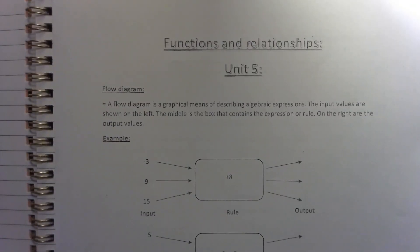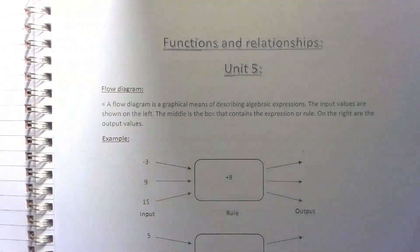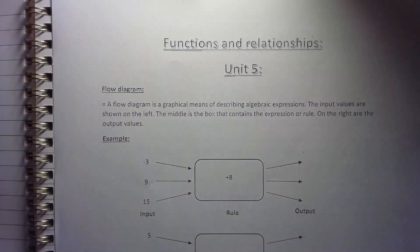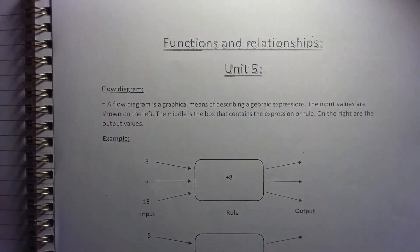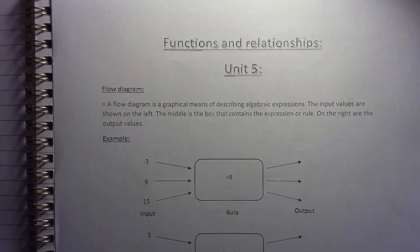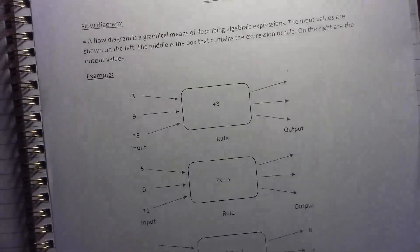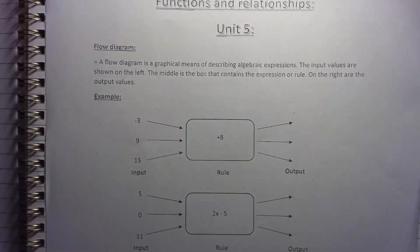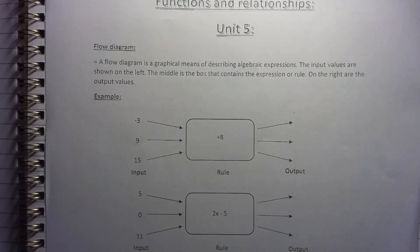Alright, Grade 8. This one is on Unit 5, the Functions and Relations. It's very similar to what was done in Unit 4, where you have the numbers going in when you're substituting and then you're getting the numbers out. So in this case, we're starting with a flow diagram. You might remember this from primary school, the spider diagrams were similar. So you have done these before, but let's just go over it.